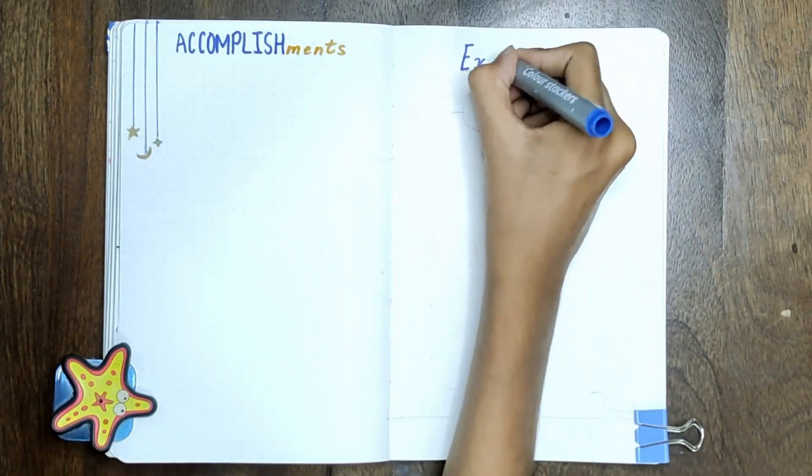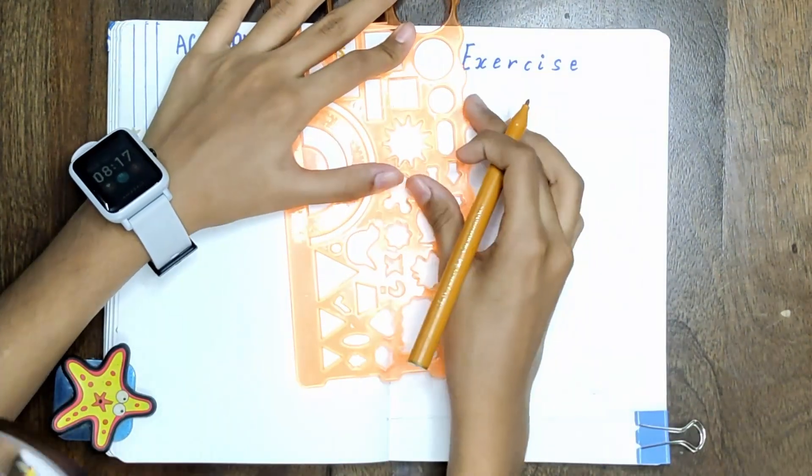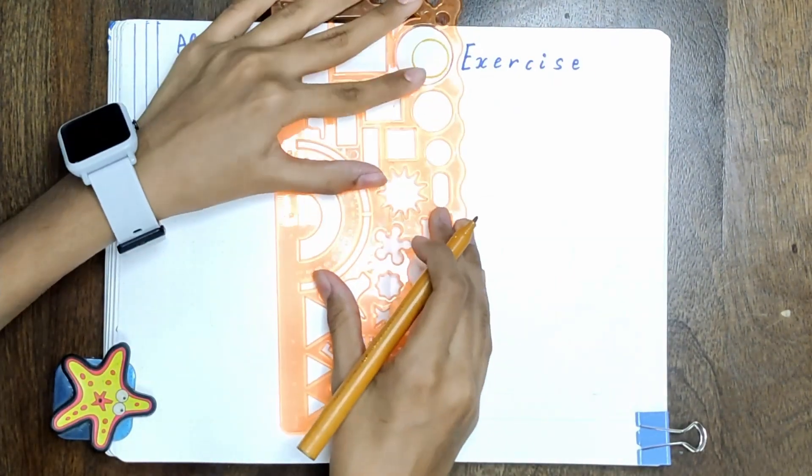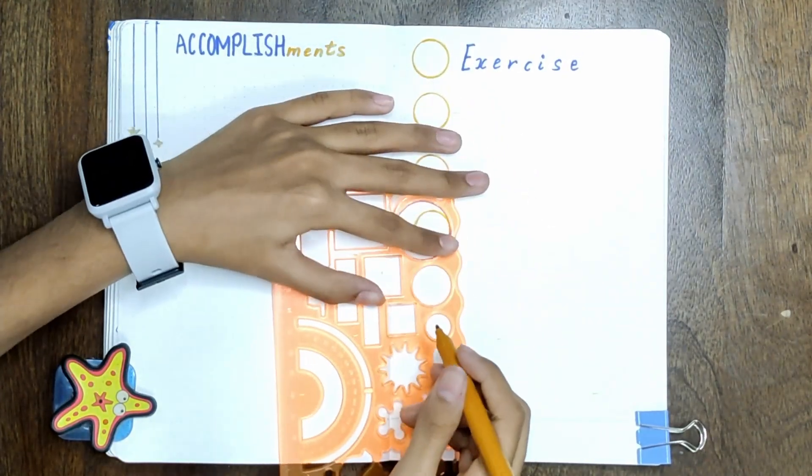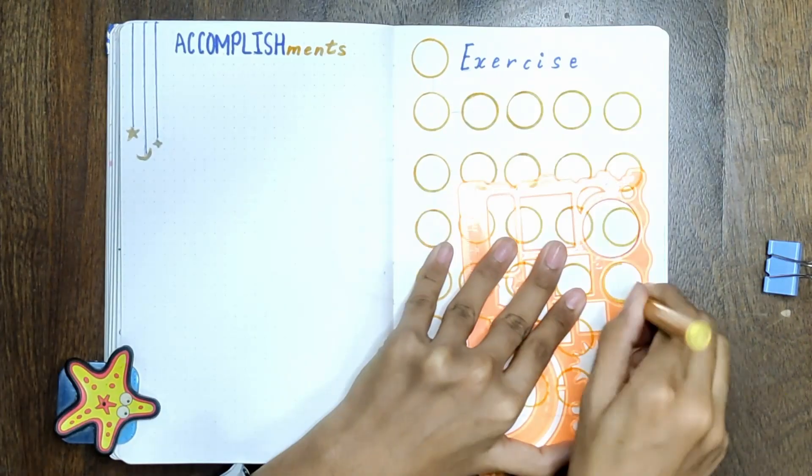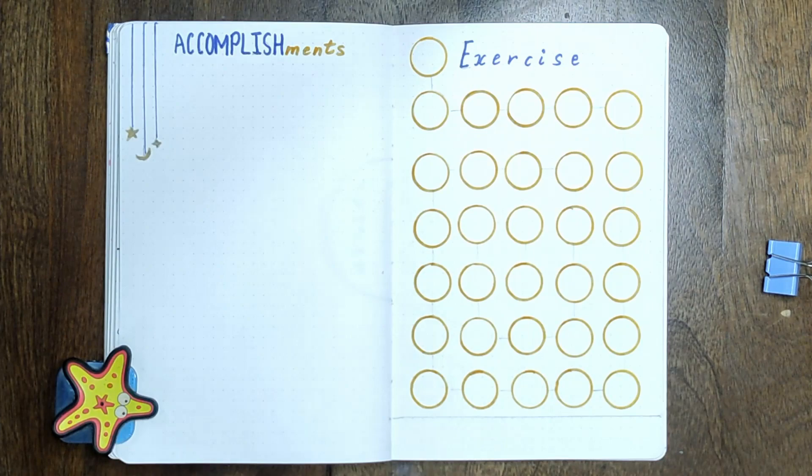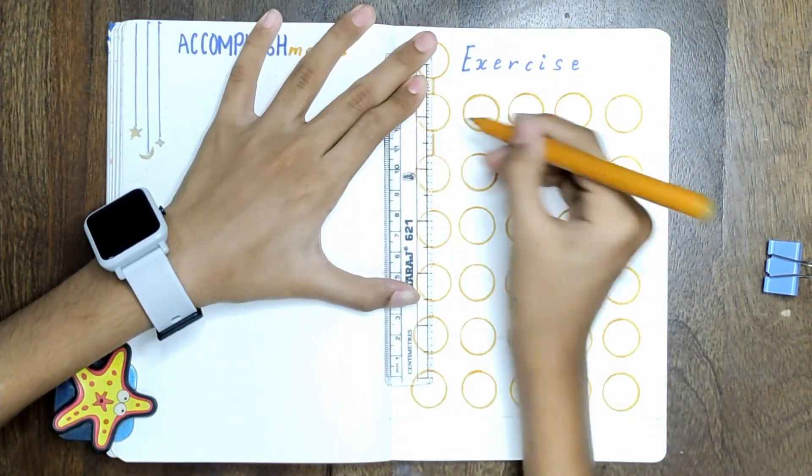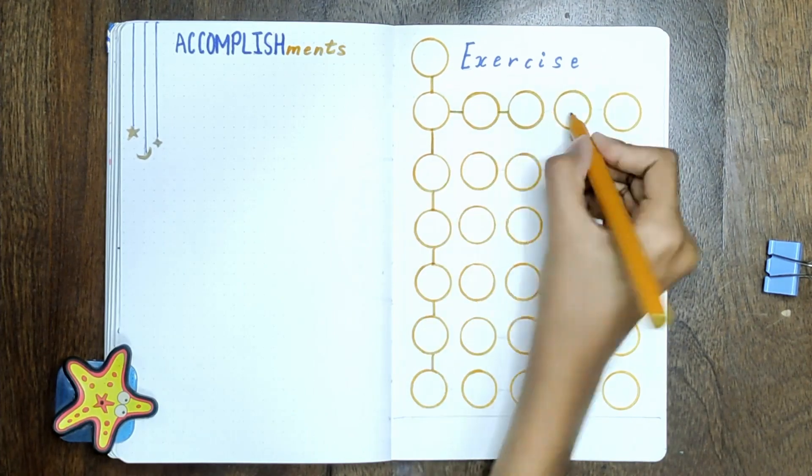On the right, I have a page to track my exercise. So what I'm going to do over here basically is I'm going to draw 31 different circles because there are 31 days in October, and if I exercise on a given day, then I fill in one circle. So I'm going to probably add the dates later.